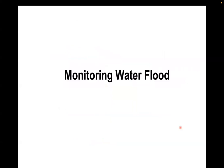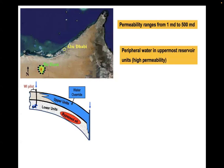Let's go to the field examples. The first is water flood monitoring, one of the most commonly encountered problems in oil field applications. This application was done in the Middle East, close to Abu Dhabi, in an oil field called the Bulhasa. The Bulhasa is a very old oil field that started secondary recovery a long time ago. For secondary recovery, they did water injection — specifically peripheral water injection, injecting water along the edge of the oil field.